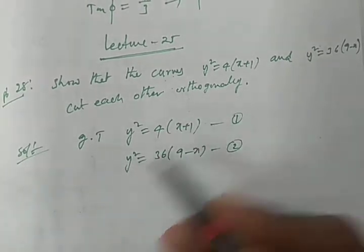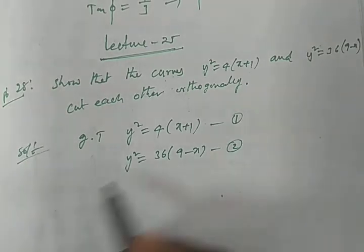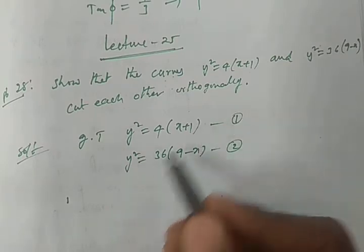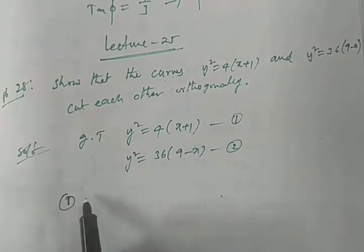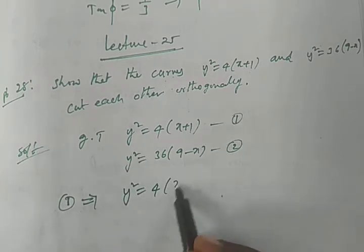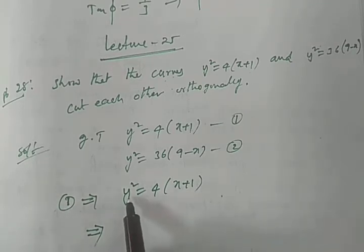First of all, we will find the common point of equations 1 and 2, meaning the intersecting point. To find the intersecting point, we have to solve equations 1 and 2. Equation 1 gives y² = 4(x+1). This implies, substituting y² value from equation 2: